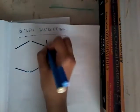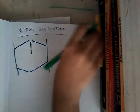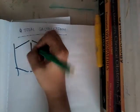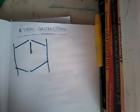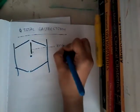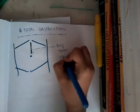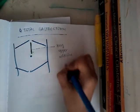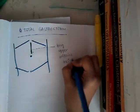In total gastrectomy, how do you approach first? This is the abdomen — you give a long upper midline incision. This is an open surgery technique; we don't discuss laparoscopic techniques. We give the long upper midline incision.